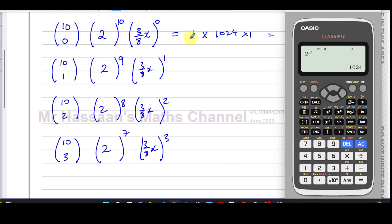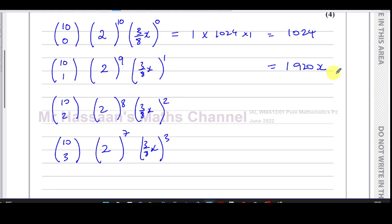Now what you could do from here, you don't have to write all of this down - you could just put this in your calculator in one go. For example, 10C1 multiplied by 2 to the power of 9, and then multiplied by 3 over 8 to the power of 1. Now we've got an x there, so that's going to be x to the power of 1. That will give you your coefficient straight away, which is 1920. And that's going to be the x term.